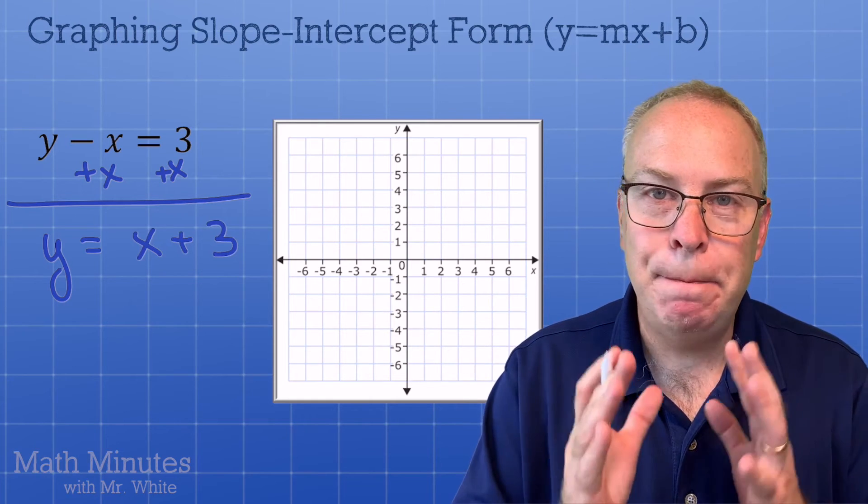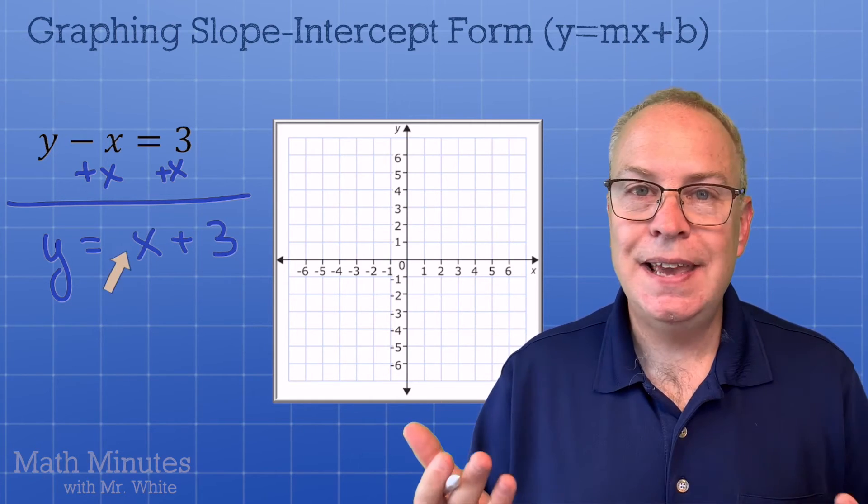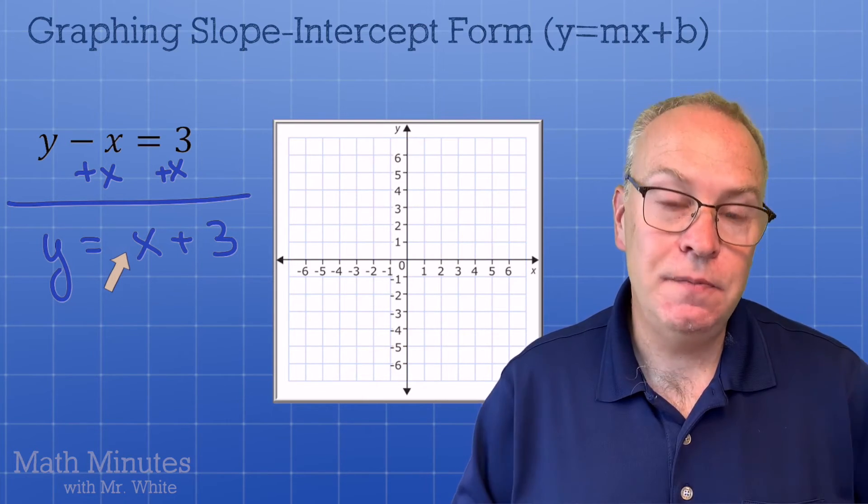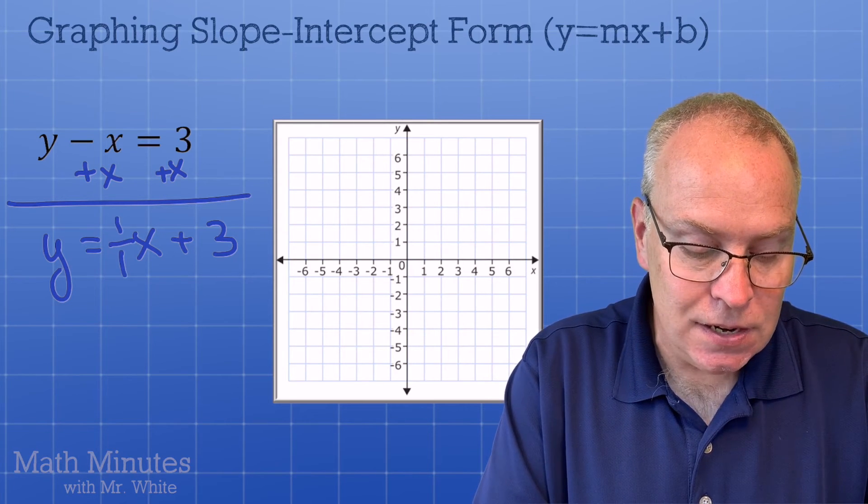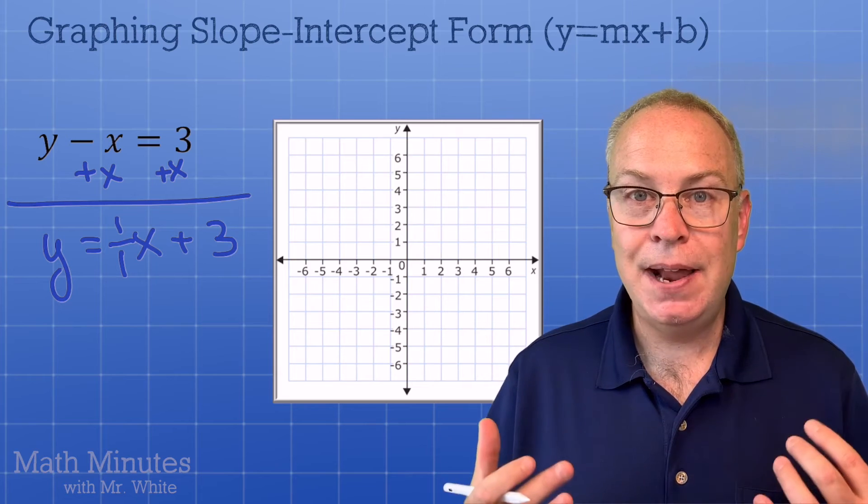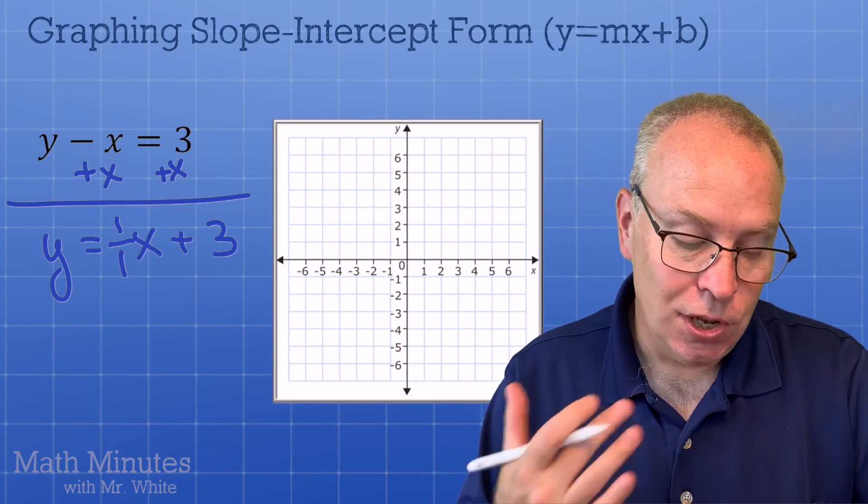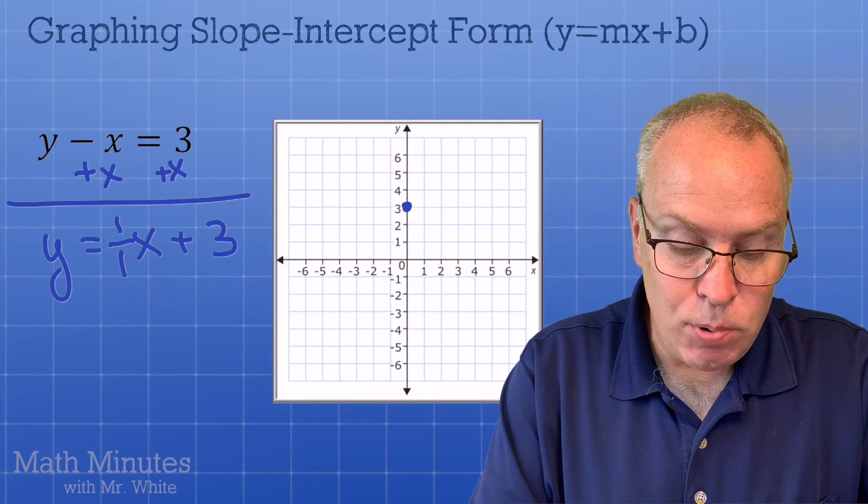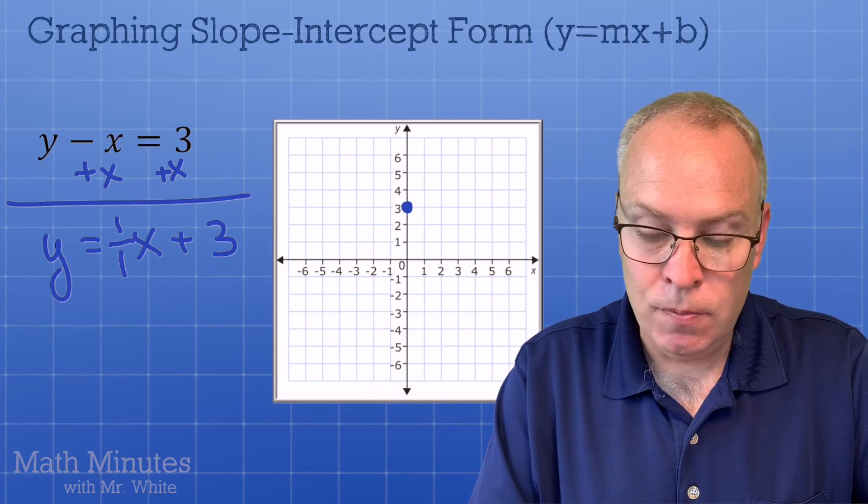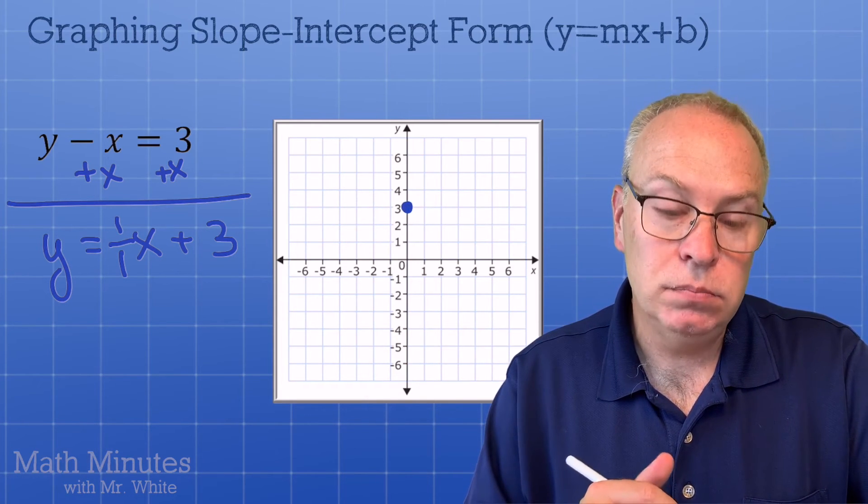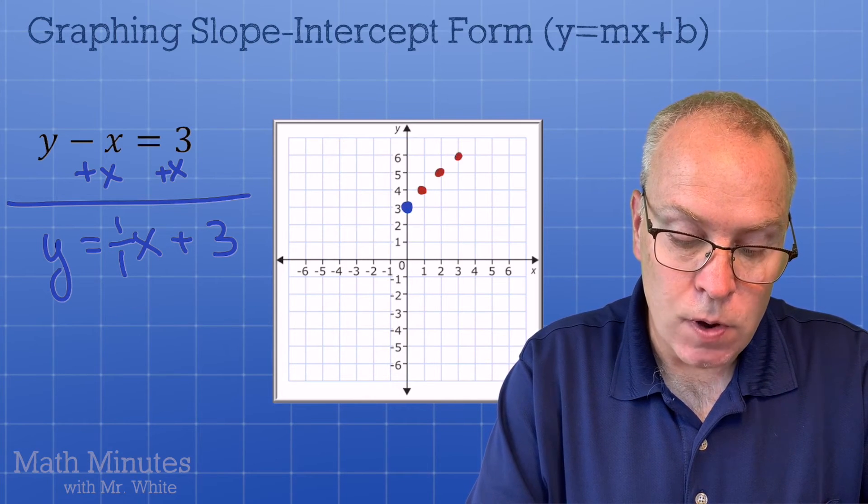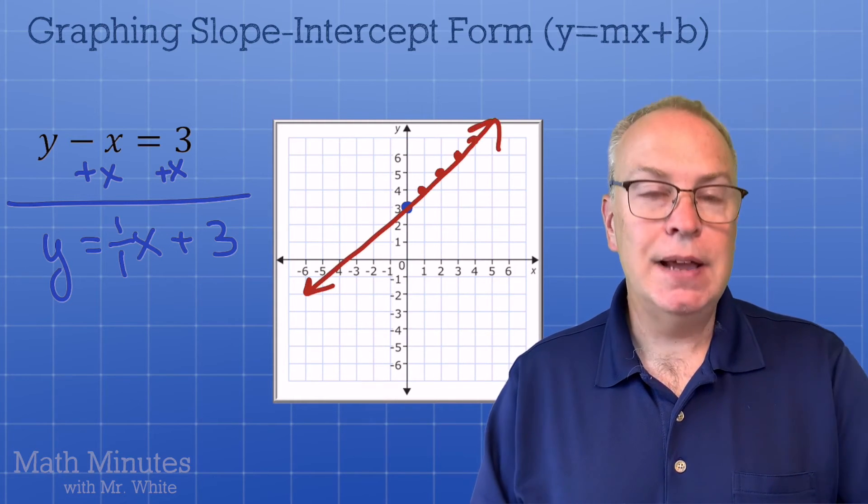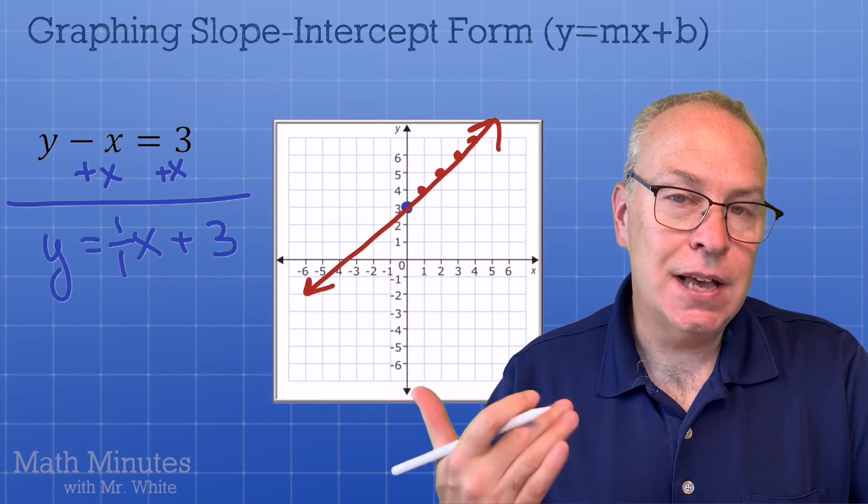All right, so I think you would agree the b value is three here. What's the m? I don't see a number there. Is it zero? No, of course not. It's one. There's an invisible one there. And it's not even a bad idea to think about it as one over one. That's not a bad idea because this has a slope of one, which is like a 45 degree angle line on our graph here. I'm going to go up three, put a dot. That's my freebie. That's my b value. And then from there, I'm going to go up one over one. Up one over one. See how that's 45 degrees. And there's my linear function, y equals x plus three.